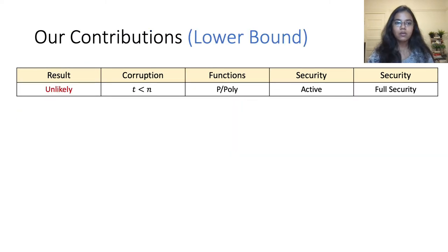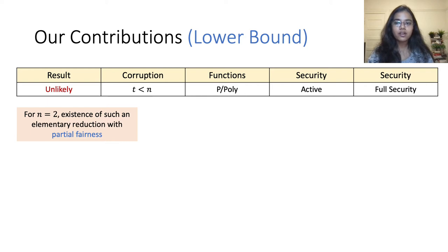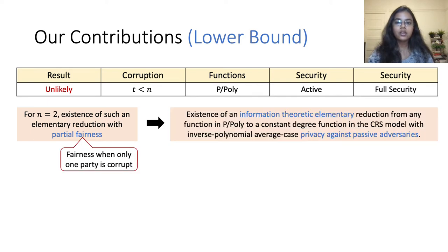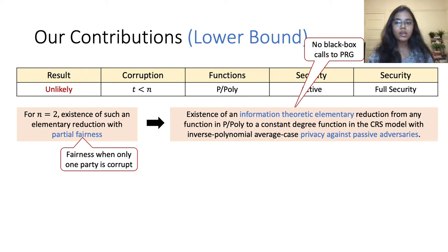To establish our lower bound, we show that for two parties, existence of an elementary reduction for all efficiently computable functions with partial fairness — that is, where fairness is only guaranteed when one of the parties is corrupt — implies existence of an information-theoretic reduction for any efficiently computable function in the CRS model with inverse polynomial average-case privacy against passive adversaries. Even though we don't prove an unconditional impossibility, the implications of this result are highly non-trivial, as this implies constant-round information-theoretic MPC protocols that are far beyond the current state of the art.